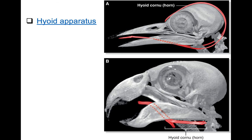Here's another diagram showing the extent of the hyoid mechanism in a woodpecker compared to another bird like a parrot, which has a much smaller, very short, pad-like tongue.